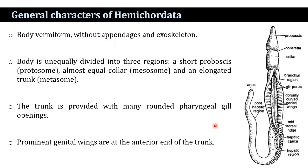Features of Hemichordata: the body is vermiform, without appendages, and exoskeletal with no cuticle. The body is unequally divided into three regions: a short region that is the proboscis, also known as the protosome.